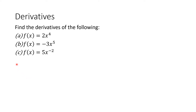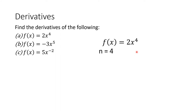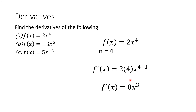Let us now find the derivatives of the following functions. All of these functions are in the form ax raised to n. For f(x) = 2x raised to 4, our n is 4 and our coefficient a is 2. To get the derivative, f prime of x equals 2 multiplied by the exponent n, which is 4, and x is raised to 4 minus 1. So f prime of x = 8x cubed.